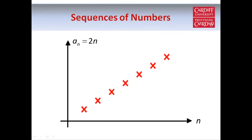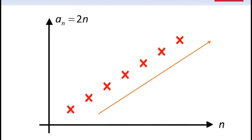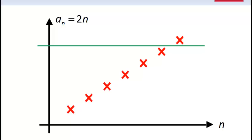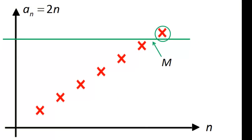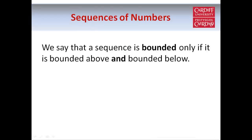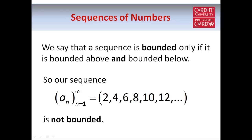Looking at our sequence a_n equals 2n, the terms keep going up in a linear fashion and the first term is the smallest, so if we let k equal 2, all of the terms are greater than or equal to k, so k is a lower bound — the sequence is bounded below. On the other hand, if we try to find an upper bound, it's not going to work, because no matter how high we make the line, there's always going to be a term above it. So it's impossible to find a number m such that all terms are less than or equal to m.